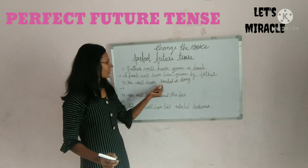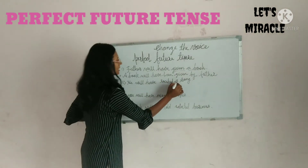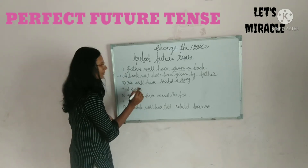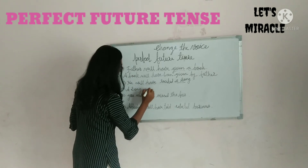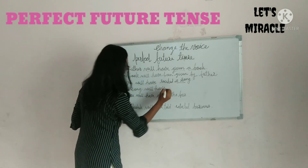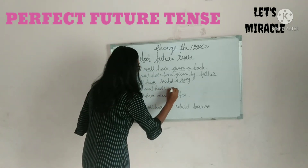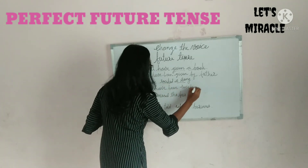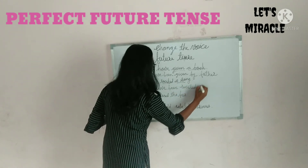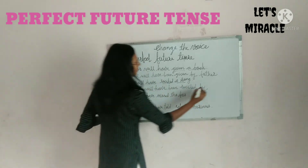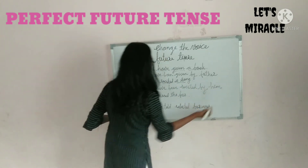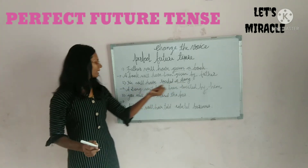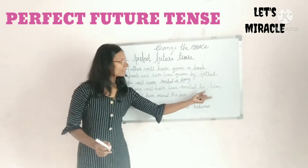He will have recited a song. This will change into passive voice as: a song will have been recited by him. 'He' will change into 'him'. So he will have recited a song becomes a song will have been recited by him.